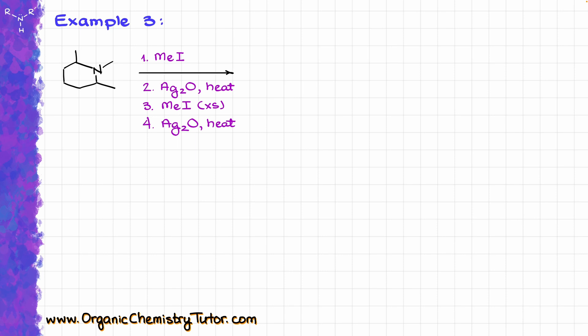For the last example, I have one of the probably most common trick exam questions I've seen in a lot of tests. It looks like we're going to be doing the Hoffman elimination twice, because I'm seeing methyl iodide and silver and heat once, and then it's repeated. So we'll get some product after the first two steps, and then continue with this reaction.